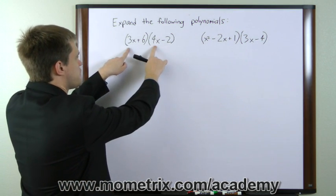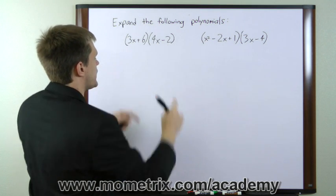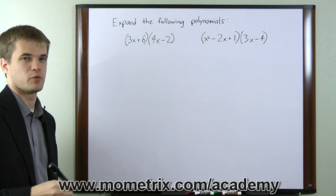It describes the order in which you multiply each pair of terms. So you would multiply the first pair, the outside pair, the inside pair, and then the last pair. That's the order in which we'll proceed here.